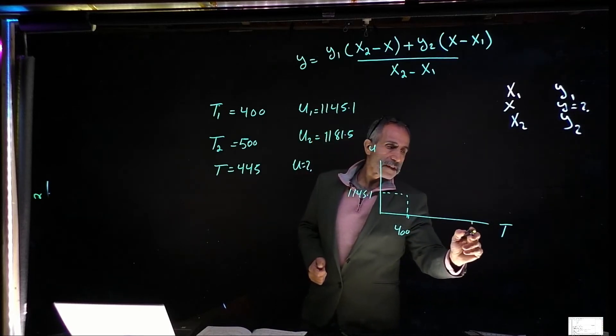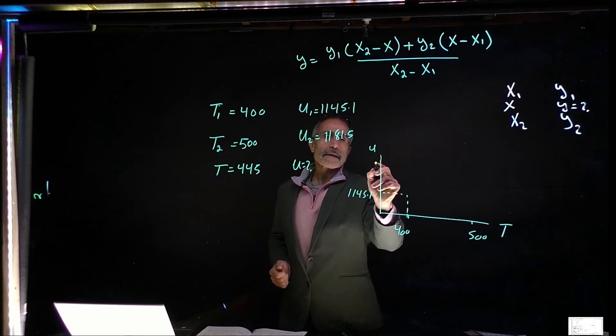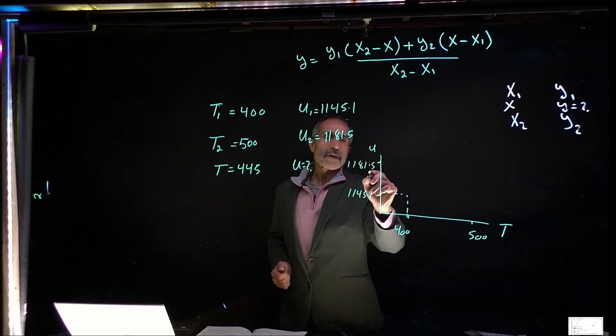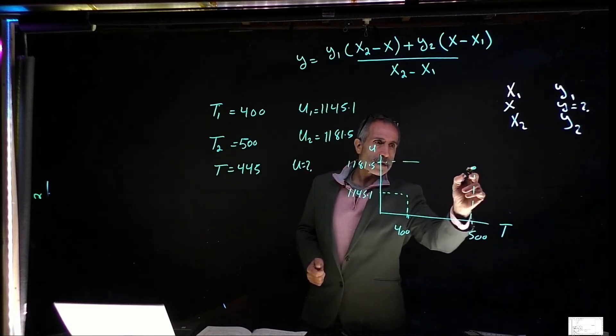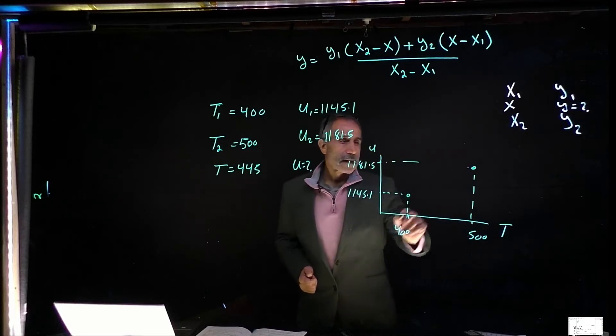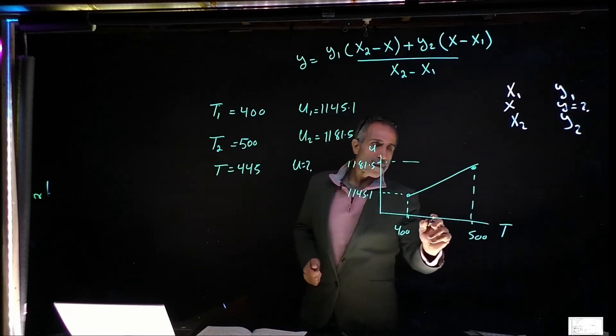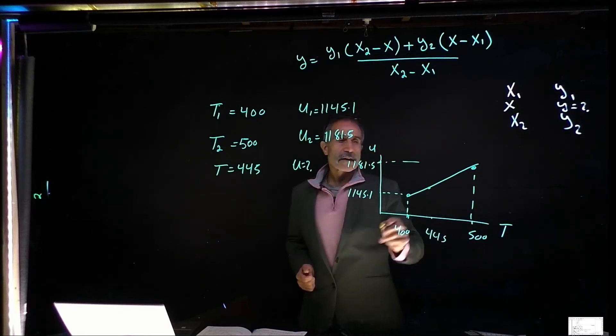And at 500 degree, I'll have right here 1181.5. So I'm going to come in. And this is the point I got. This is the two point. And I'm going to run a straight line analysis right there. Now I'm looking for 445. What is this here? That's what I want to know.